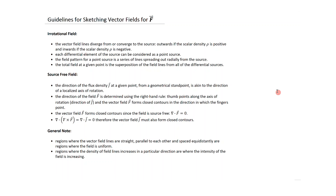Guidelines for sketching vector fields: for an irrotational field, vector field lines diverge from or converge to the source — outwards if scalar density rho is positive, inwards if negative. Each differential element can be treated as a point source. The field pattern for a point source is lines spreading radially, and the total field is the superposition of contributions from all differential sources.